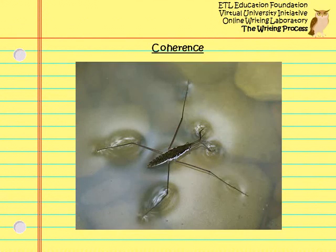Coherence is the property of sticking together — just as an insect is able to stand on the surface of pond water because of water's property of coherence. It is not enough that a paragraph only has unity; its contents must logically and smoothly flow together. A coherent paragraph is more understandable and more easily read. You should strive for paragraph coherence by using common words and phrases that link concepts to one another.